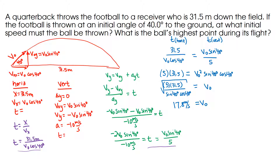I don't have my HP calculator, so that answer may be slightly off since I'm using a different calculator. But that answers the first part: the ball must be thrown at an initial speed of 17.8 meters per second.